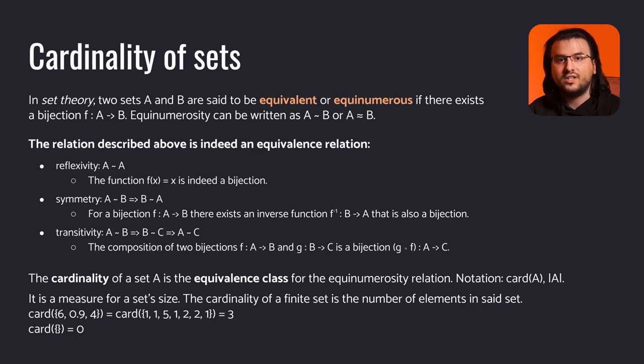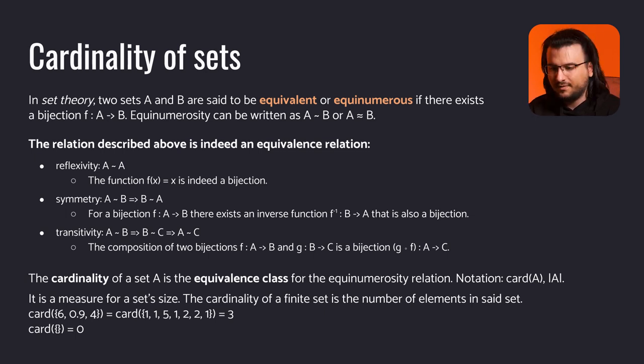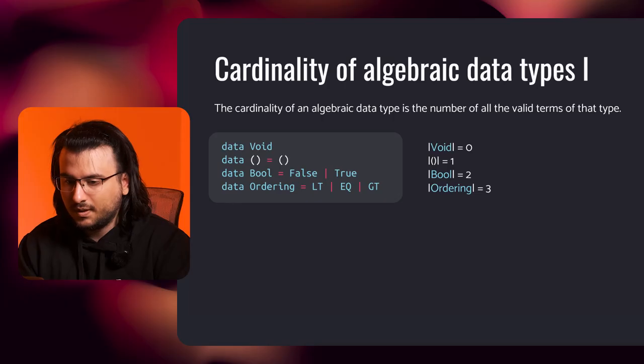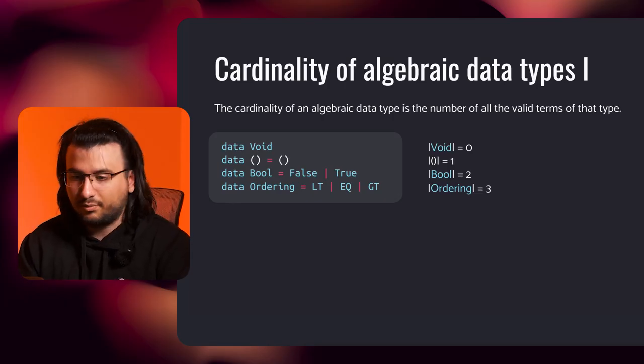We define cardinality as the equivalence class for the equinumerosity relation, and it can be interpreted as a measure of a set's size. The cardinality of a finite set is precisely the number of elements in it. We can reason about the cardinality of algebraic data types in a similar manner. The cardinality of an algebraic data type is the number of all valid terms of that type.